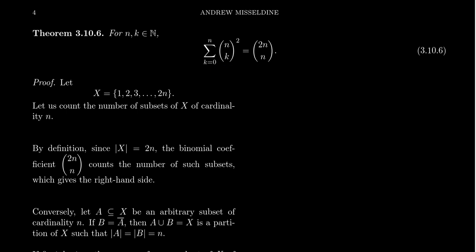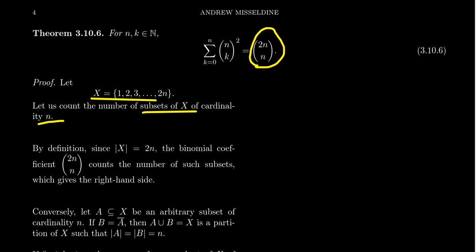The left-hand side is far more complicated, so I'll use the low-hanging fruit to determine what object to count in two different ways. The right-hand side is a single binomial coefficient — binomial coefficients count subsets. I want a set whose cardinality is 2n. So take X = {1, 2, 3, ..., 2n}, which gives a set of cardinality 2n. Since the cardinality of X is 2n, the number of subsets of cardinality n is 2n choose n — that's the right-hand side. Now we need to show how the left-hand side counts subsets of X whose cardinality is n.